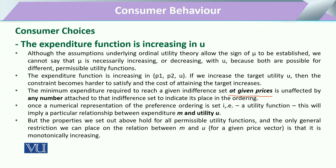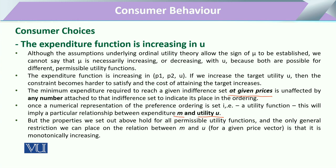This implies a particular relationship between expenditure — that is, income m — and utility u. The properties set out hold for all utility functions, and the general restriction we can place on the relation between m and u is that it is mostly monotonically increasing: if income increases, we can expect a higher utility level, and likewise, if higher utility is desired, higher income is required.